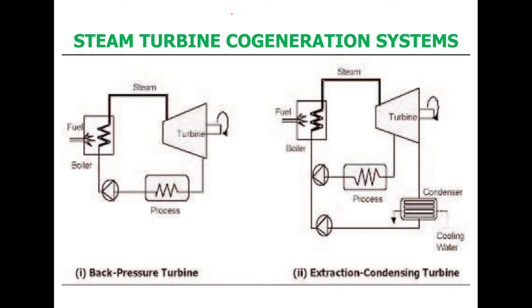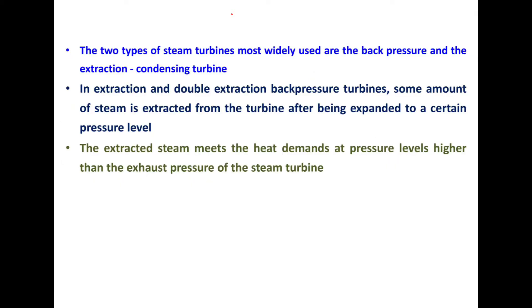In the extraction condensing turbine, the condenser unit is provided separately and the process unit is connected at the middle of the turbine stage. The exit steam enters the condenser, and then re-enters the boiler to generate steam, which is fed back into the turbine entry. The process unit is joined at an intermediate point between the turbine entry and exit. This is how the extraction condensing turbine works. The two types most widely used are the backpressure and the extraction condensing turbine.